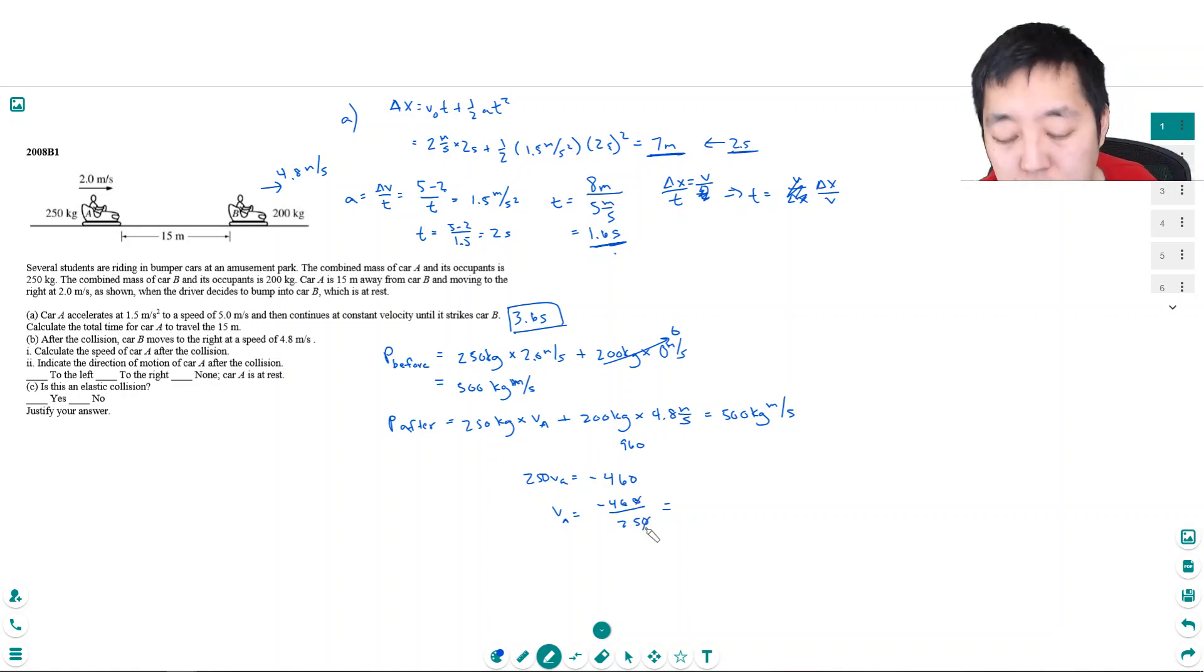And so v_A is equal to 290 over 250. I'm going to use my calculator for that. 1.16 meters per second. Now, let's calculate what the, let's see what the question is. Calculate the speed. Speed is the magnitude of velocity.